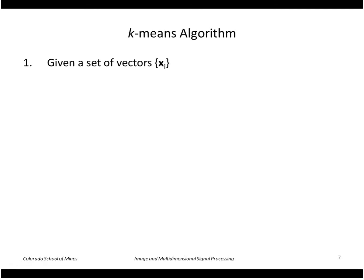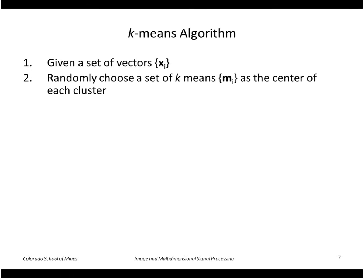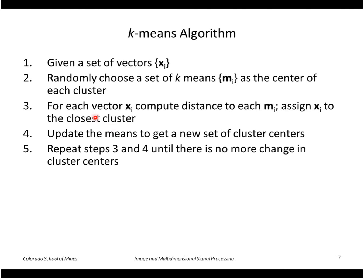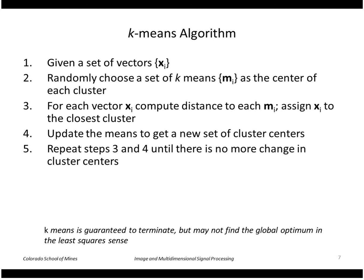The k-means algorithm is fairly simple. We start with a set of vectors and randomly choose a set of k means as the center of each cluster. For each vector x, we compute the distance to each center or mean and assign x to the nearest center. We then update the means — recomputing all the cluster centers — and repeat the assignment and update steps until there is no more change in the cluster centers. K-means is guaranteed to terminate, but it may not find the global optimum in the least-squares sense. A good heuristic is to restart k-means at multiple random places to avoid local minima.